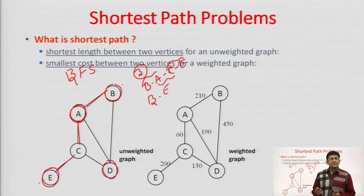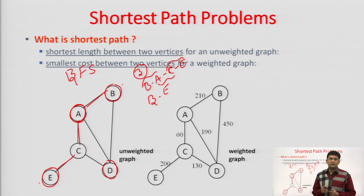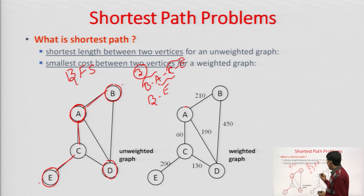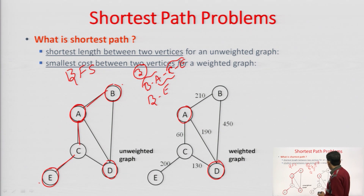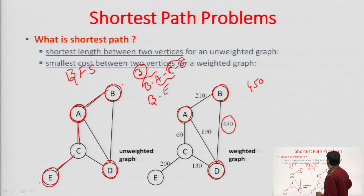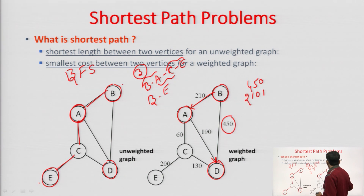Another variant would be that weights are assigned between the pair of stations. On the right-hand side you have a graph wherein weights have been assigned on the edges. If you have to find out the shortest path between b and d, you can see that the direct cost between b and d is 450, but if you go from b to a and then a to d, the cost of the path would be 210 plus 190, that is 400.